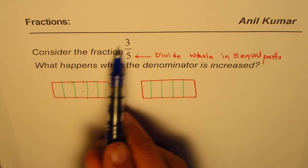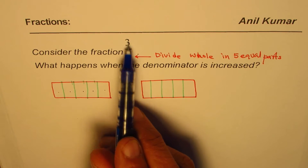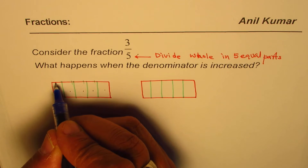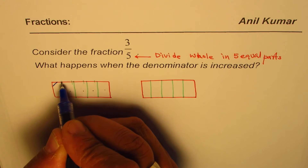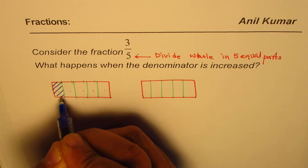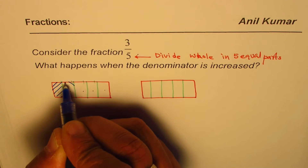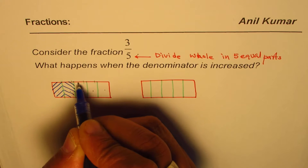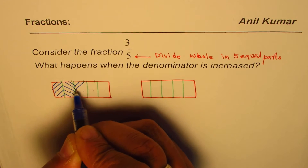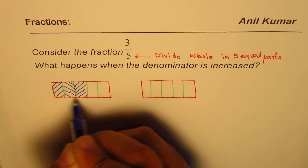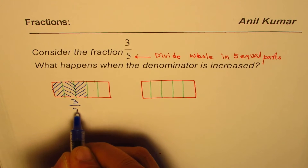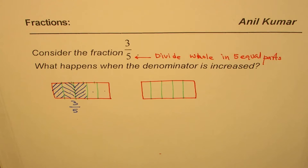When we divide the whole into five equal parts, we get the denominator represented in our diagram. Now we say three out of five — that means we select three parts. Let me shade: one, two, and three. That much is three-fifths, three out of five.